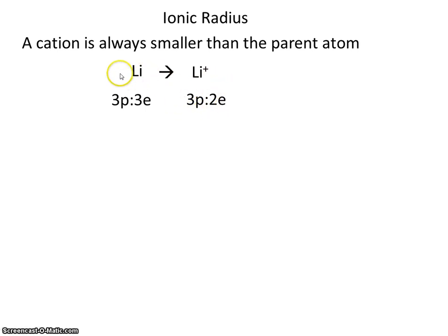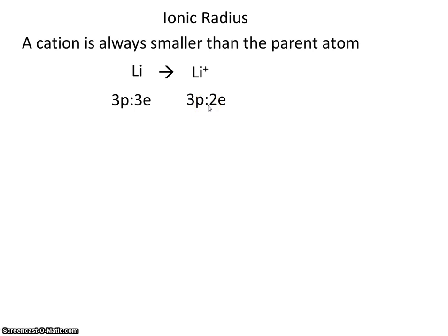The ratio here is one to one, but the ratio here is greater than one to one. So now instead of three electrons being pulled in by three protons, we only have two electrons being pulled in by three protons. So now each one of these electrons experiences a greater pull. Additionally, electrons tend to repel each other and need some space. If there's fewer electrons, they simply require less space.